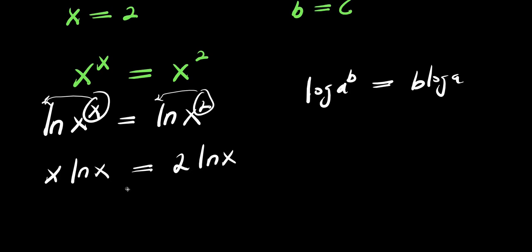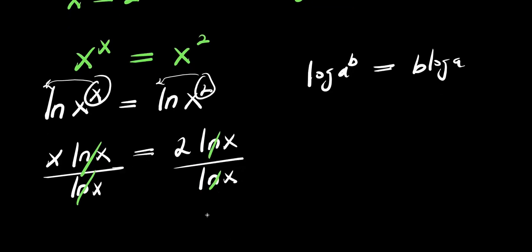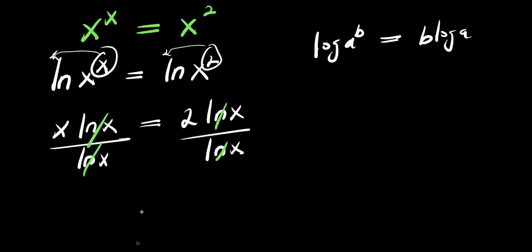We divide each part of this equation by ln(x). The ln(x) cancels on both sides, and we still get our solution x equals 2. This is another way of solving it to confirm x=2, but there is also another solution.